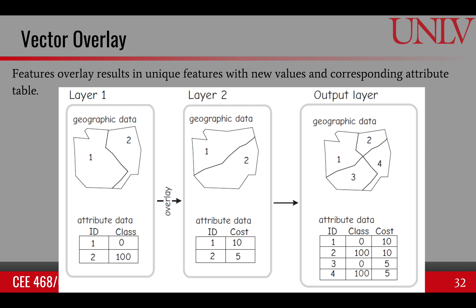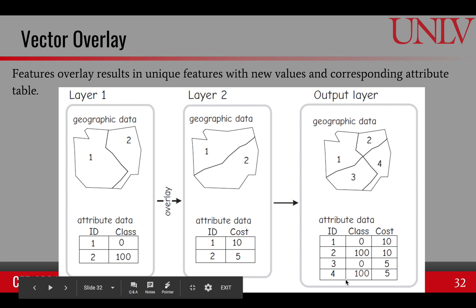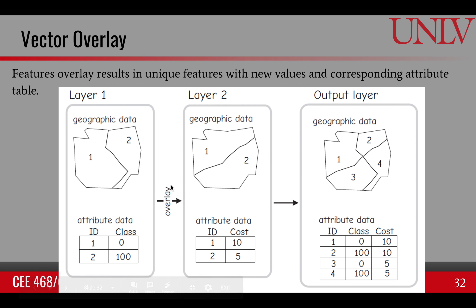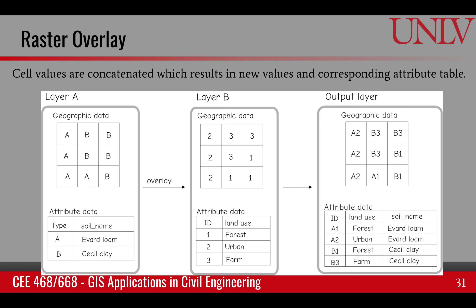Likewise, we can do the same thing for vector overlays. Suppose we have two vector data sets and overlay them. All the possible combinations may occur. We have two polygons here, 1 and 2, and similarly two polygons 1 and 2 in the other layer. The outcome will be four polygons after intersecting these two together. In our attribute table, we'll have four rows, and each row will contain both the class and the cost information from the two input vector data sets.